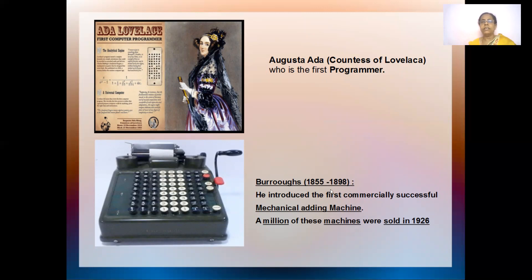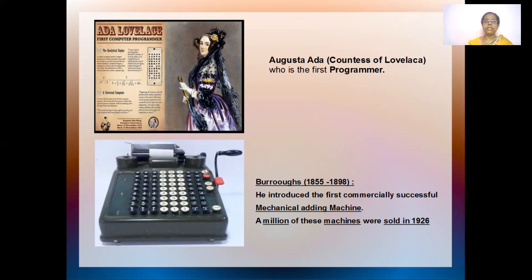Then came Burroughs, from 1855 to 1898. He introduced the first commercially successful mechanical machine that did the adding. You can see how it's printing here with the help of this handle, and because it was doing these calculations on paper, many of these machines were sold in 1926. So Burroughs was an important person who introduced this mechanical adding machine.